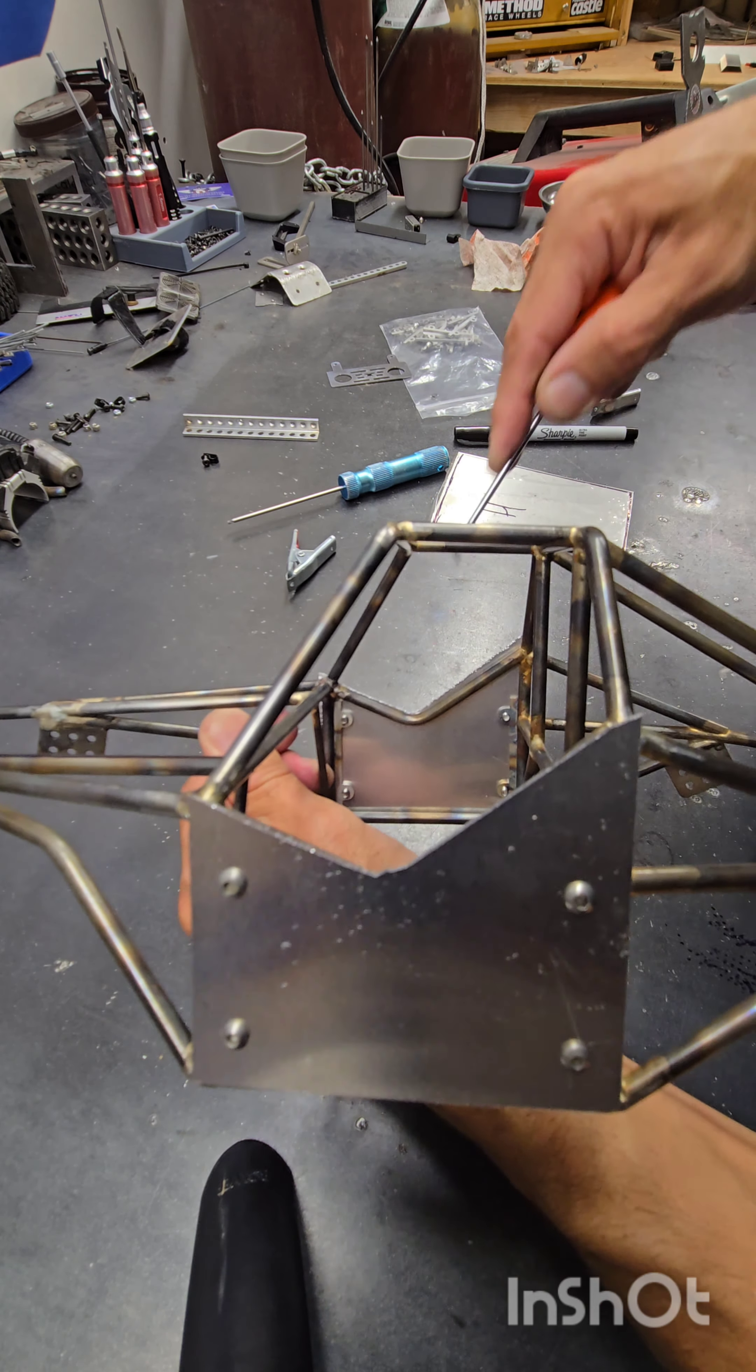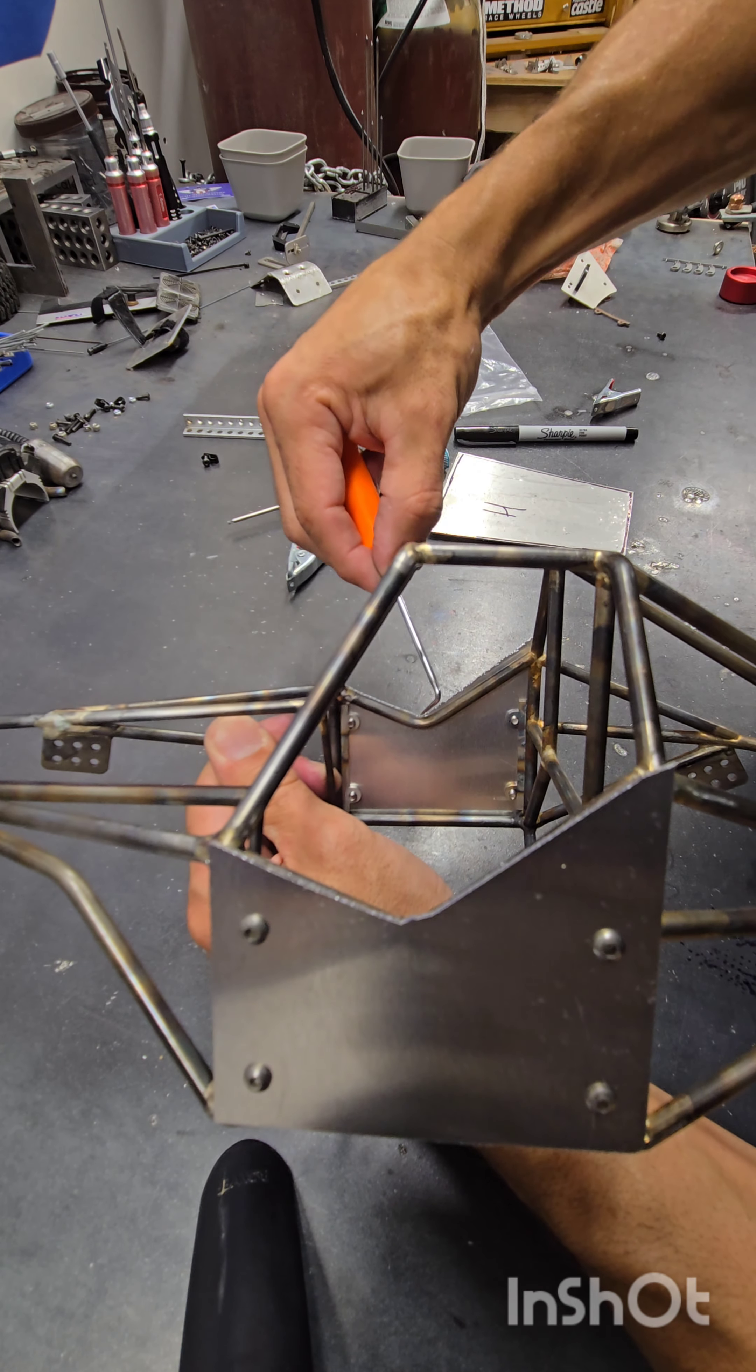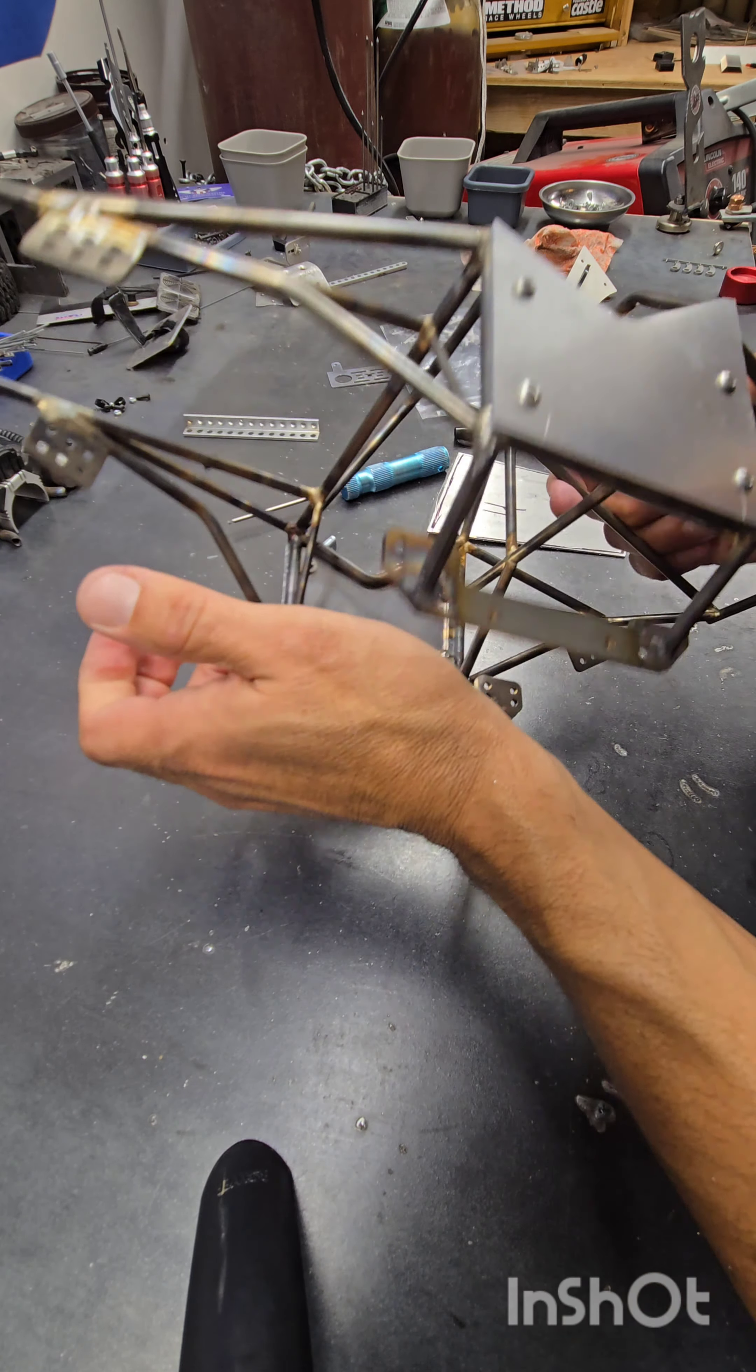So next, to get the consistent reveal, I like to use a scribe and kind of aim for the center of the tube and make a mark.